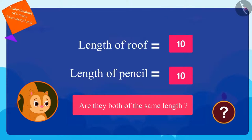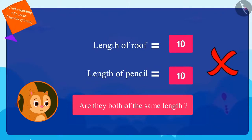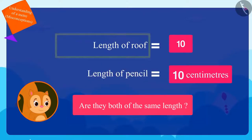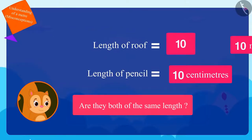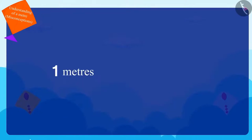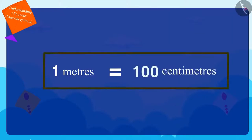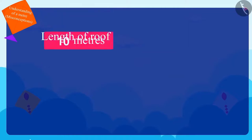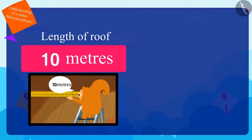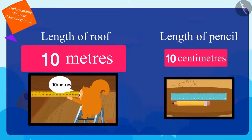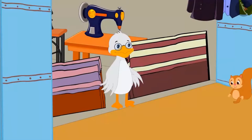What do you think, children? Is Chanda's thinking correct? No. Chanda's pencil is ten centimeters in length while her roof is ten meters in length. And children, you know how many centimeters is equal to one meter? Exactly! Hundred centimeters. The length of the roof is ten meters and the length of the pencil is ten centimeters, which means the roof is bigger than the pencil.